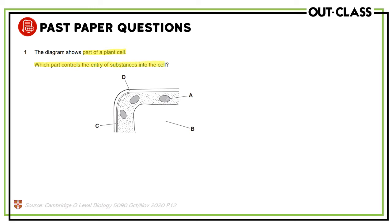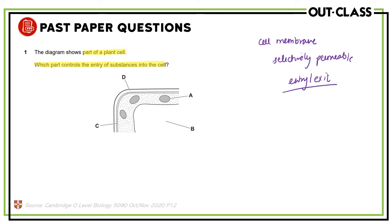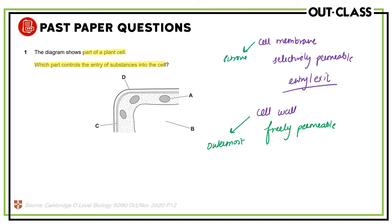The next diagram shows part of a plant cell. The question asks which part controls the entry of substances into the cell. If you remember, we said that the cell membrane is selectively permeable and so it is responsible for the entry and exit of substances into the cell. The cell wall, on the other hand, is freely permeable, so it does not control the entry and exit of substances.